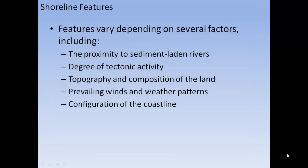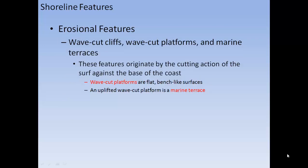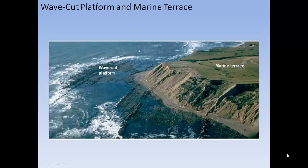Coastal features vary depending on proximity to sediment-laden rivers, degree of tectonic activity, topography and composition of the land, prevailing winds and weather patterns, and configuration of the coastline. Erosional features include wave-cut cliffs, wave-cut platforms, and marine terraces, which originate from the cutting action of surf against the base of the coast. Wave-cut platforms are flat, bench-like surfaces. An uplifted wave-cut platform is called a marine terrace.